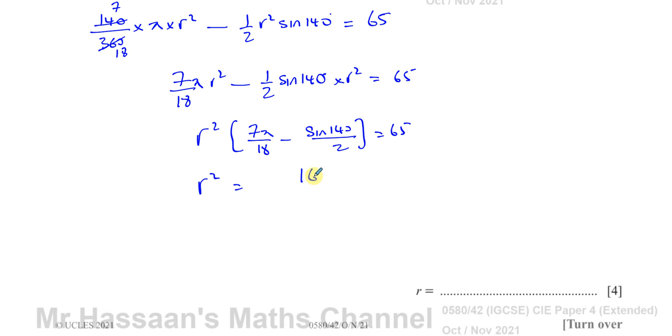To keep things in exact form, I'm just going to divide both sides by what r squared is being multiplied by. So I'll have 65 over all of this: 7 pi over 18 minus sine 140 over 2. That will give me my value of r after I take the square root of all of that.